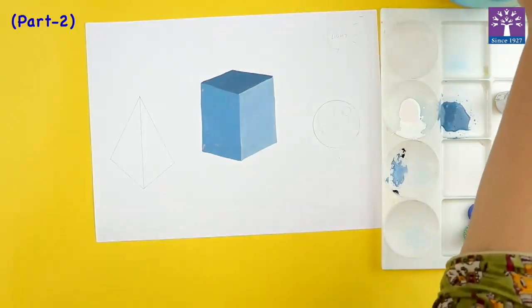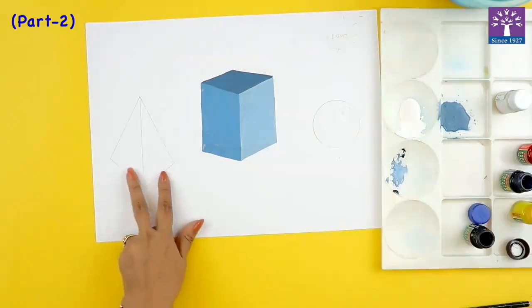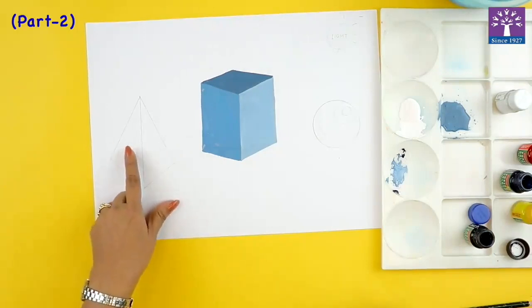There, our cuboid is now ready. We will use the same technique to paint this pyramid yellow and a tint darker of yellow.